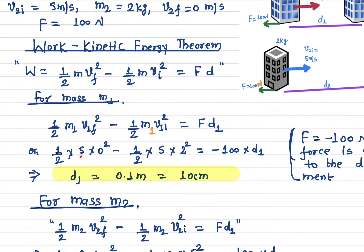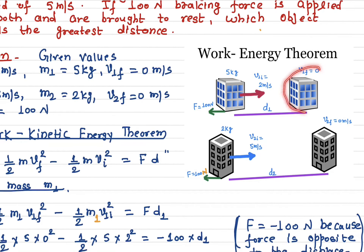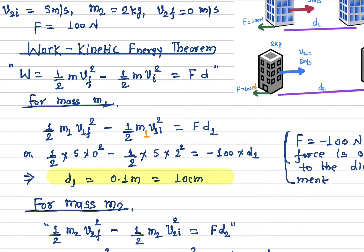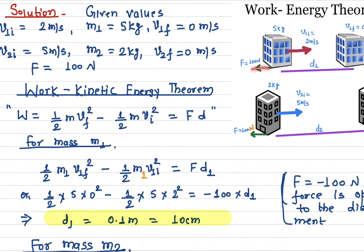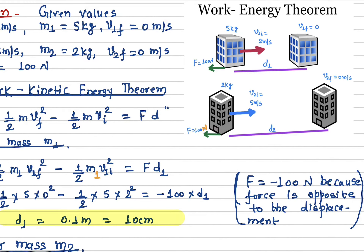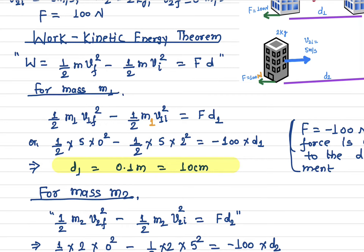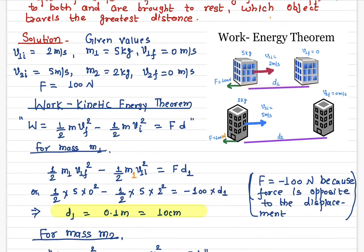Half times m1 equals 5 kg, and v1f is zero because the object has come to a stop. Half times 5 kg times v1i equals 2 meters per second. The force is negative 100 newtons because the braking force acts in the opposite direction to the displacement. Solving this gives d1 equals 0.1 meters, which is 10 centimeters.